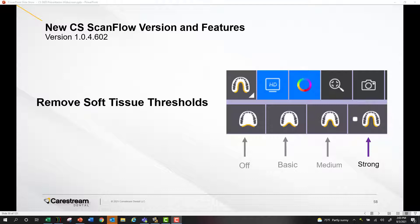In previous versions of ScanFlow, there was an option in the preferences to either turn this on or off — basically just a toggle, either more aggressive in removing soft tissue or off. Now we've actually added the feature as part of the actual scanning feature set, so you don't have to go into the preferences, making it easier to access.